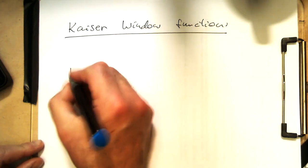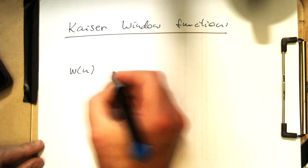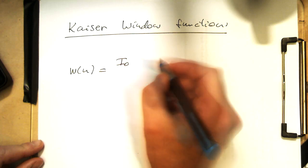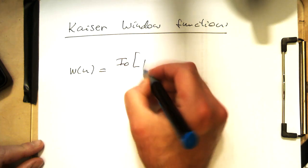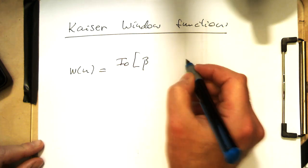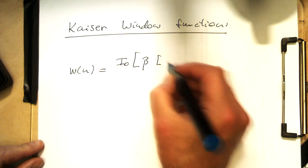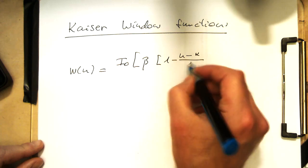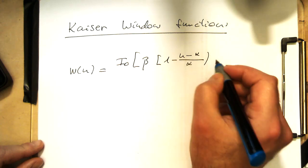That's defined as w(n) equals i_0 of beta times square root of one minus (n minus alpha) divided by alpha squared.